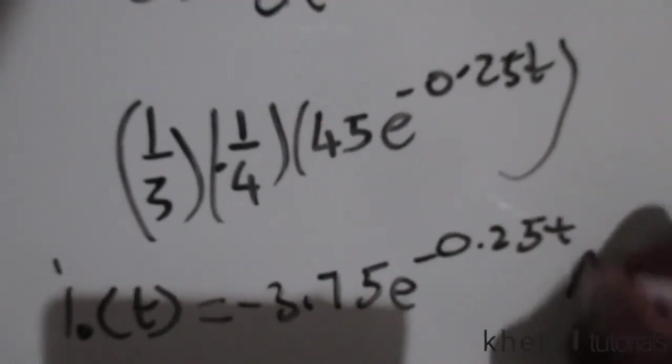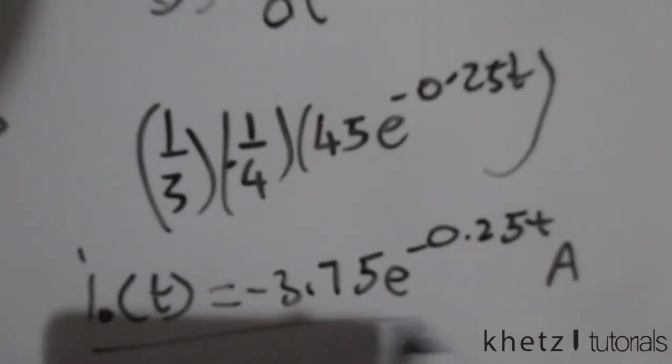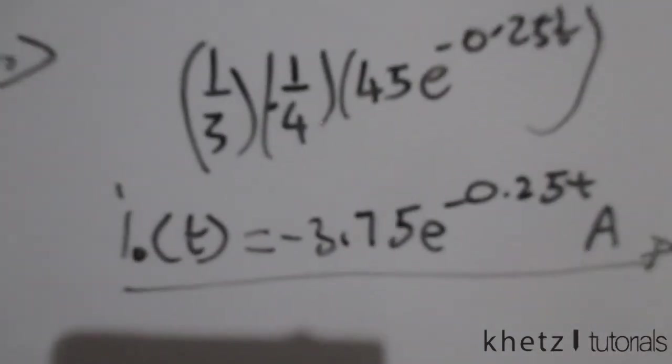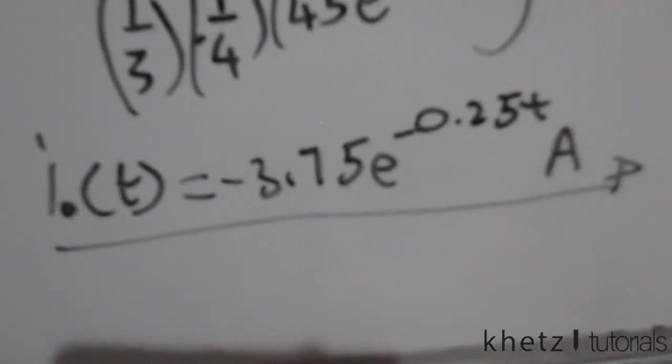Write your units over there and now we have all the values: Vx, Vc(t), and io(t).